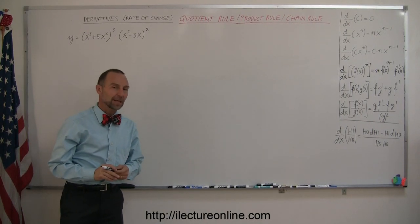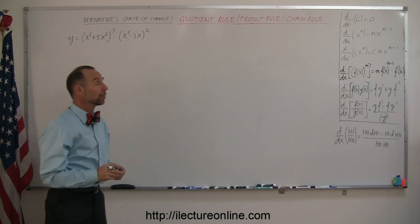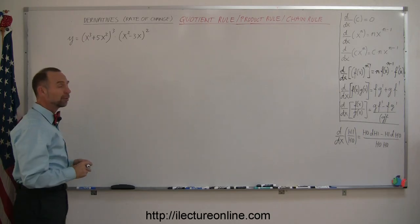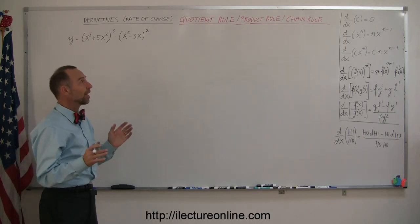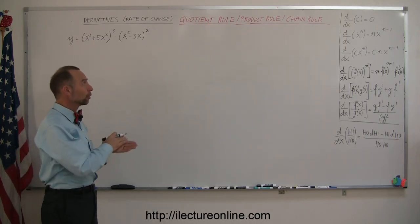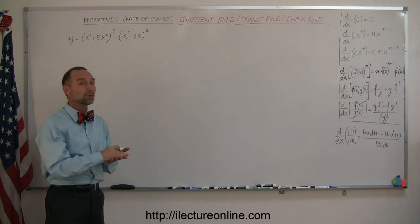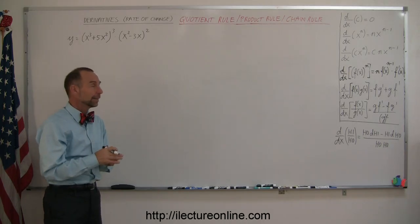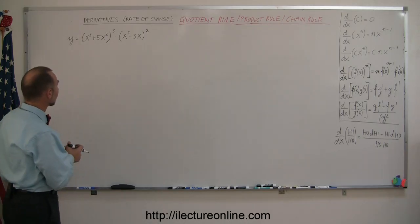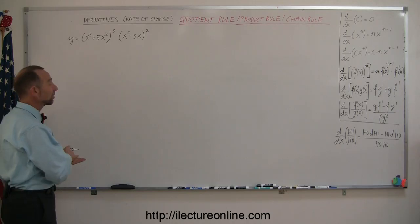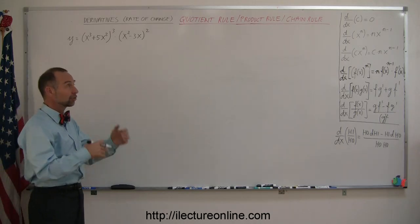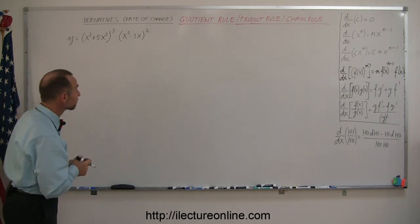Welcome to iLecture Online. Here are some more examples of how to take derivatives. What we're going to do now is show you examples where the quotient rule, the product rule, and/or the chain rule are combined. In this case, we're going to look at something where you use the product rule and the chain rule together, and eventually we'll do all three at the same time.